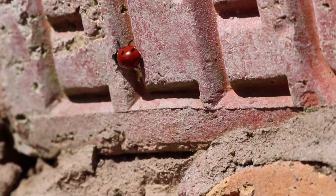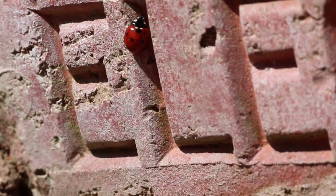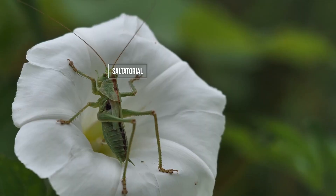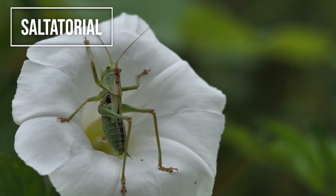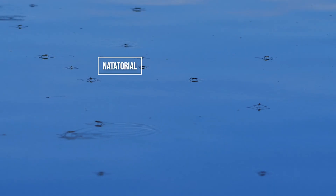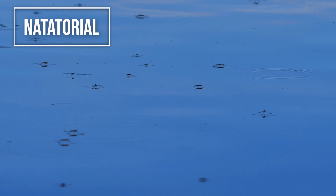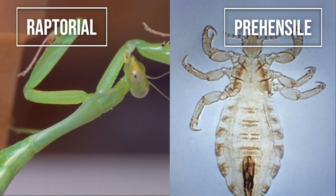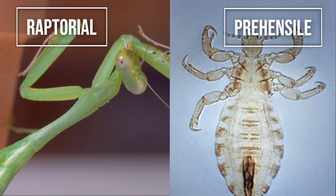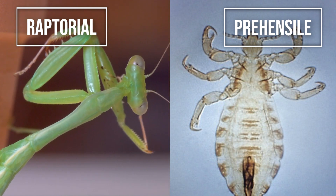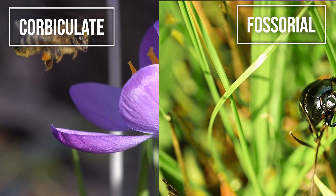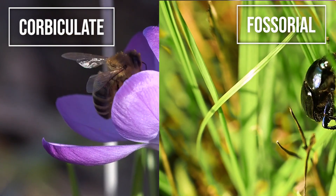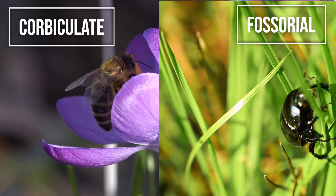The legs of insects are often modified into different forms for the niche the insect occupies. Running legs, like those of a cockroach, are known as cursorial legs. Legs modified for jumping, as exemplified by the hind legs of orthopterans, are called saltatorial. Swimming legs seen in aquatic beetles are known as natatorial legs. Grasping legs come in two forms: prey-capturing legs such as those seen in mantids, called raptorial, and legs used for holding onto a surface, called prehensile. Some highly specialized modifications include corbiculate legs modified for pollen-carrying and fossorial legs modified for digging.